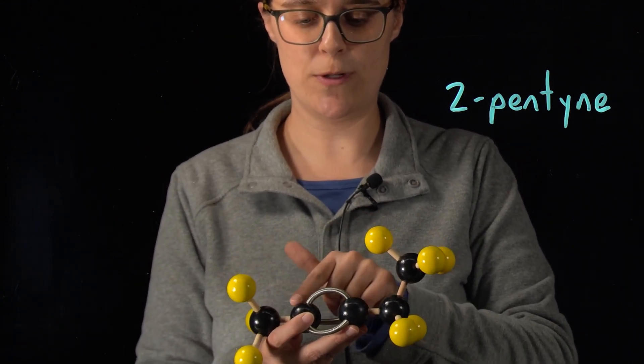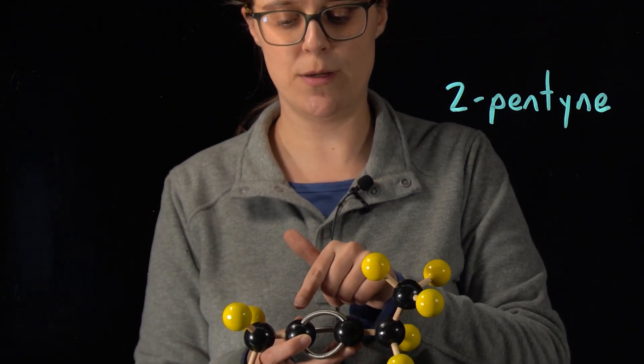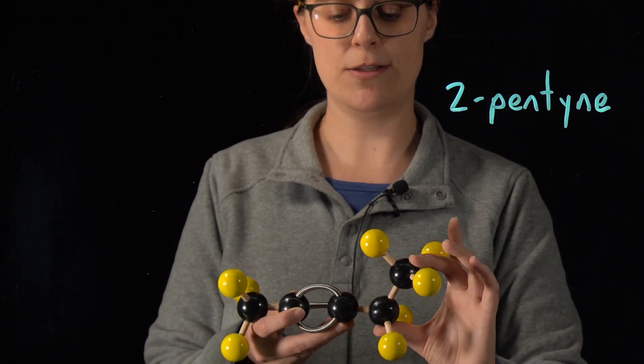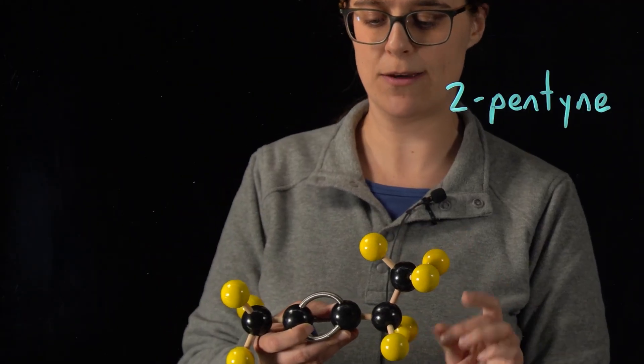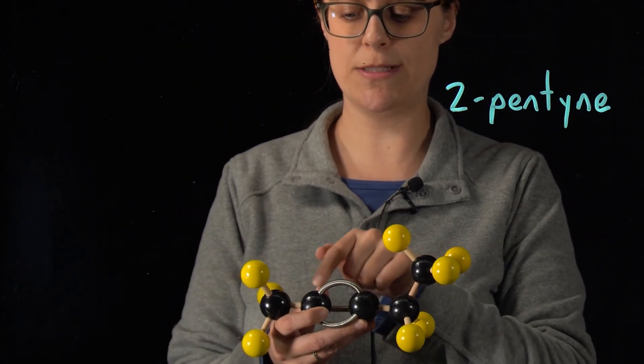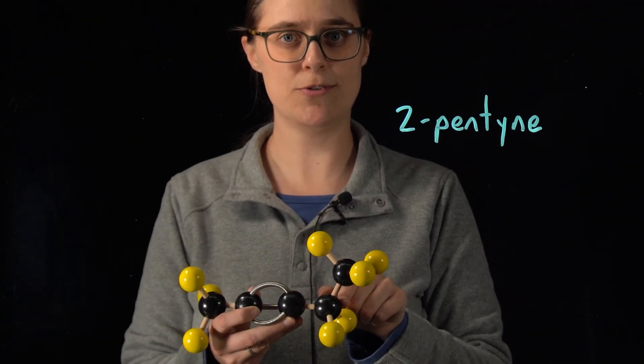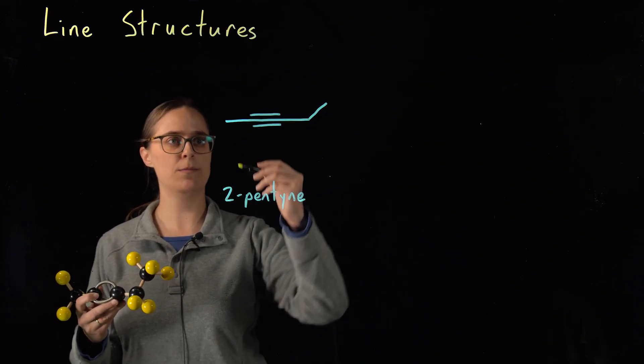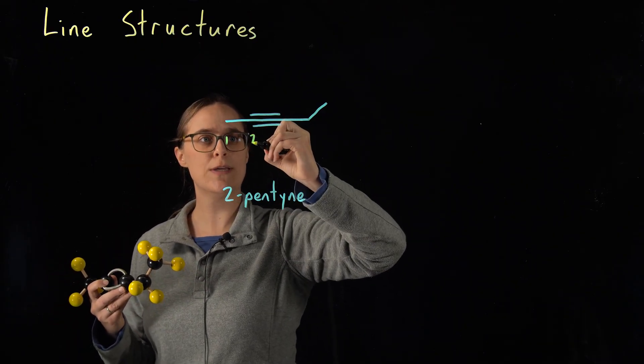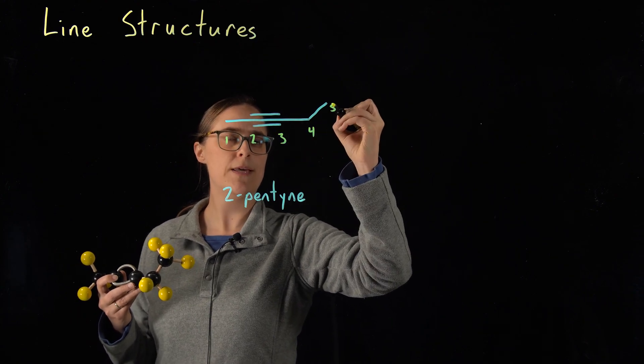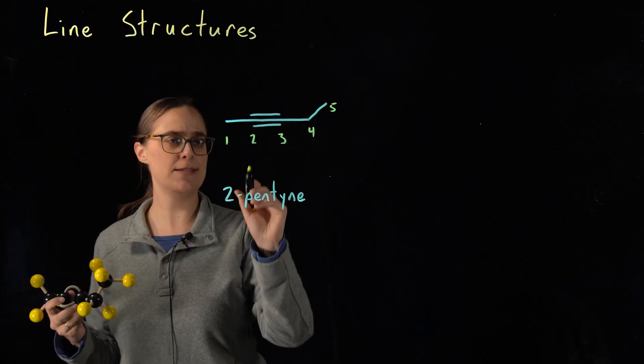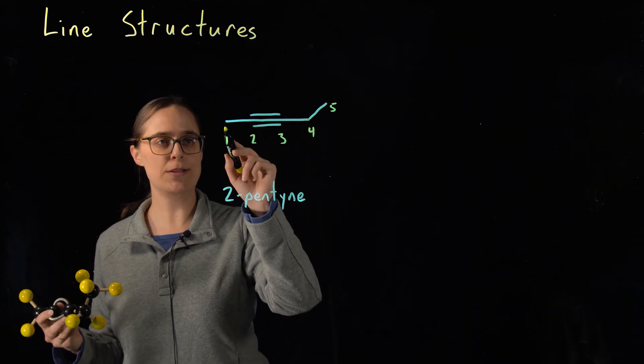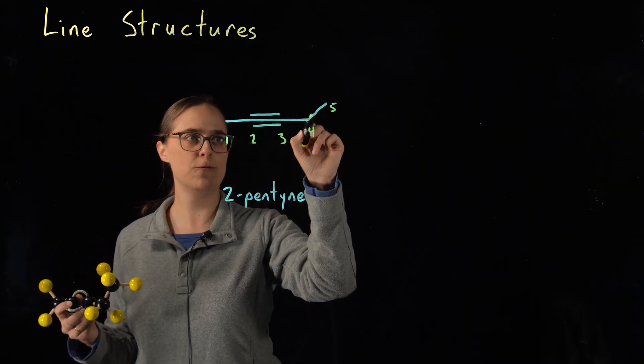Remember when I told you that you need to draw the angles of line structures in a way that closely represents the actual angles of the molecule? Well, here we have 180 degree angles. That means these four carbons are all in a straight line, so our line structure shows them as a straight line. When you are trying to figure out the locations of the carbons, it is not just beginning and end of the line and the vertices. It would also be beginning and end of any of the triple bonds.